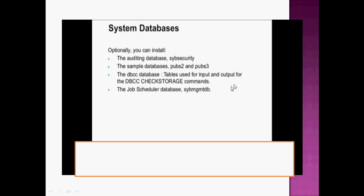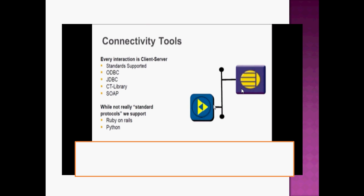The next part is connectivity tools. Communication is required between the client and server, and this is done using connectivity tools. ODBC and JDBC are used to create the connection between the client and server in the Sybase database system. We can find some similarities between SQL Server and the Sybase database system here, as JDBC and ODBC are also used in SQL Server. These are optional tools, but most commonly we use JDBC and ODBC.